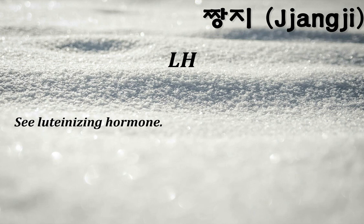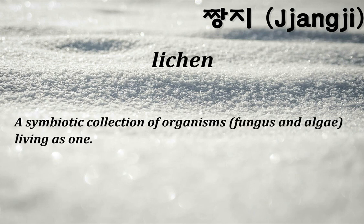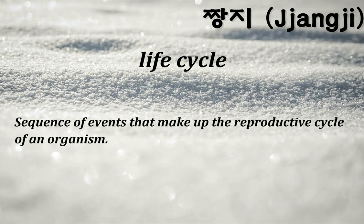Lichen: a symbiotic collection of organisms — fungus and algae — living as one. Life cycle: the sequence of events that make up the reproductive cycle of an organism.